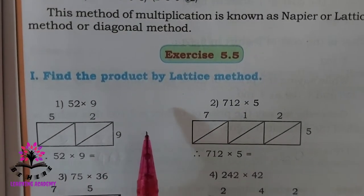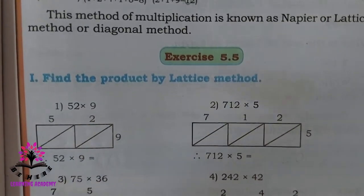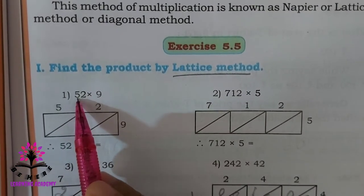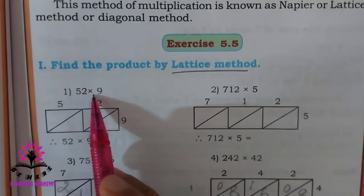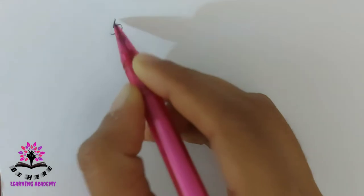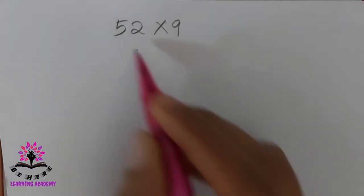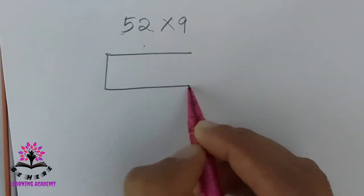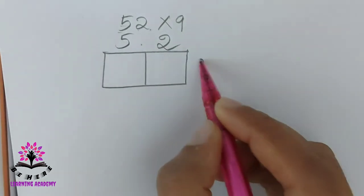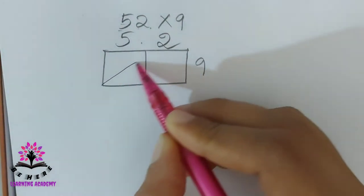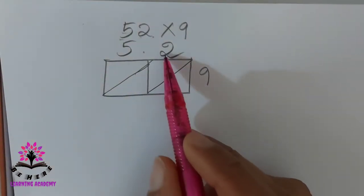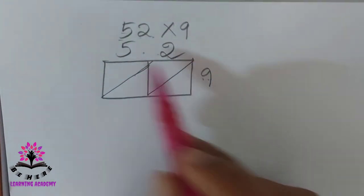Let us directly move on to the exercise and start solving problems using the lattice method. The first problem is 52 into 9. Since there are two digits, draw two boxes and write the number 52 on top, and write 9 on the side. Then draw a slanting line through each box.